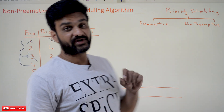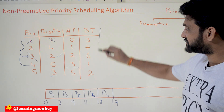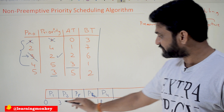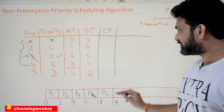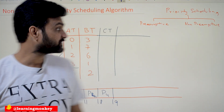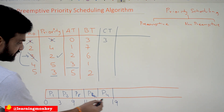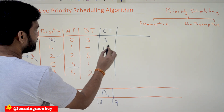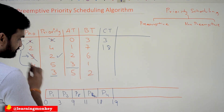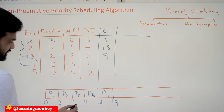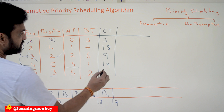This is how non-preemptive priority scheduling works. Now we will calculate the completion times. P1 completion time is 3. P2 completion time is 18. P3 is having completion time of 9. P4 is having 19. And P5 is having 11.